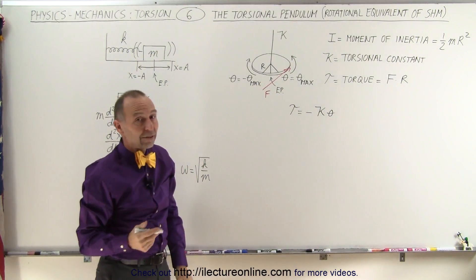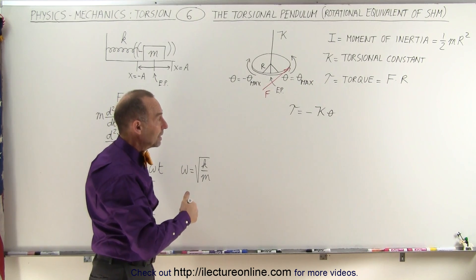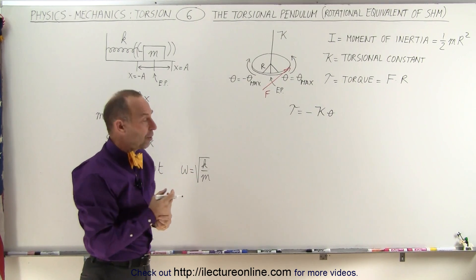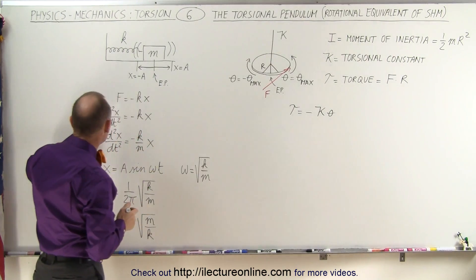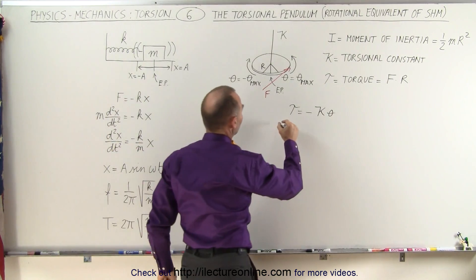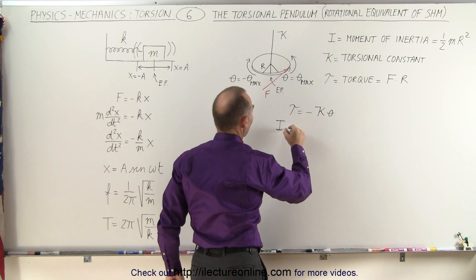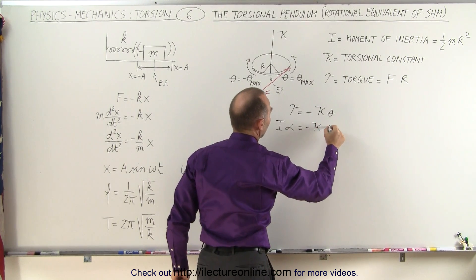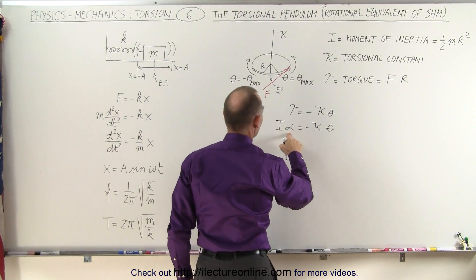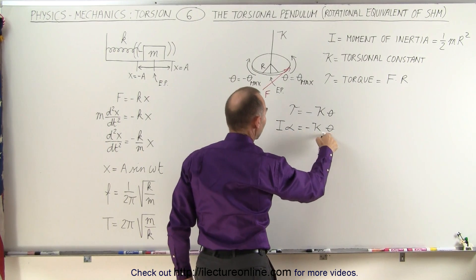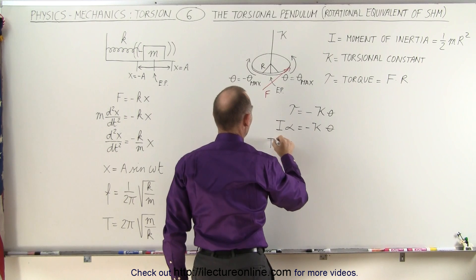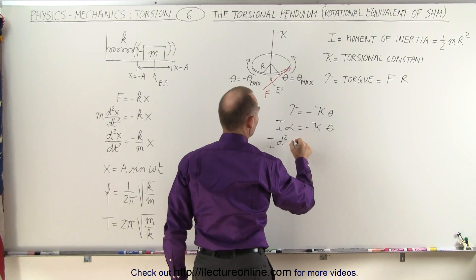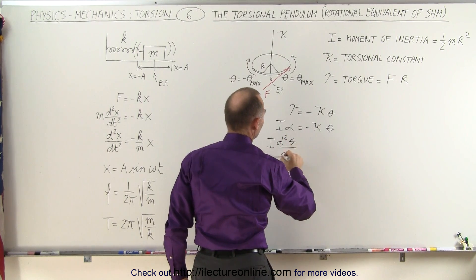We then realize that when you apply a torque that causes the, what we call angular acceleration, and instead of writing mass times acceleration, we can write this as moment of inertia times angular acceleration is equal to minus kappa times theta. And of course, this can be written as the second derivative of the angular displacement. So this becomes I times the second derivative of theta with respect to time.